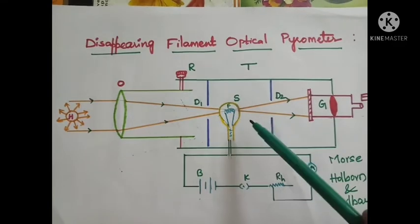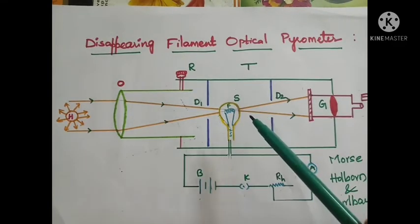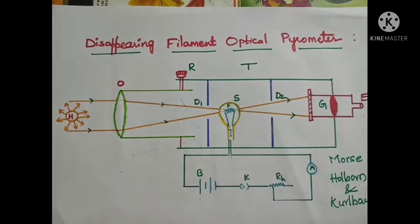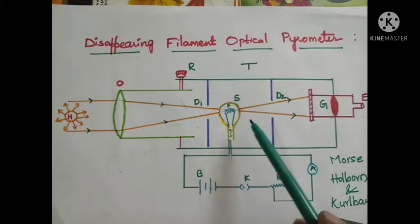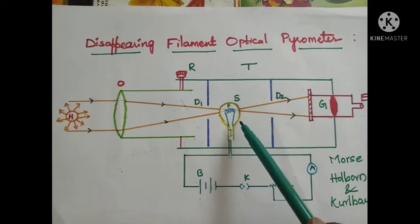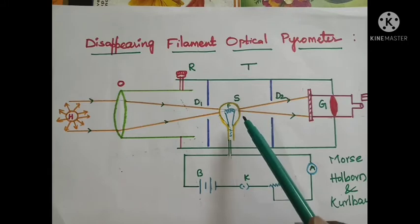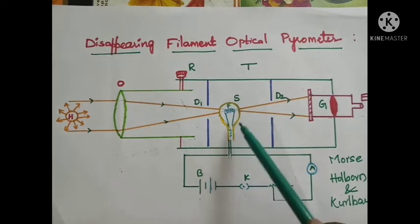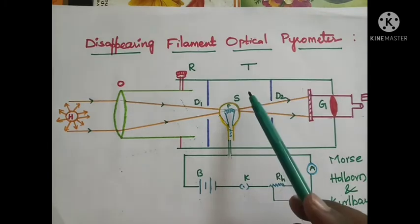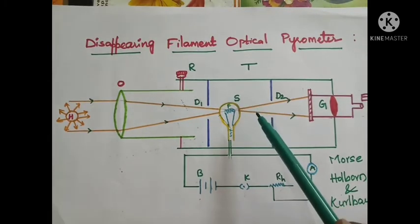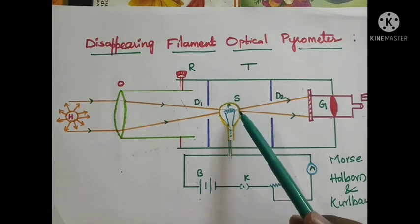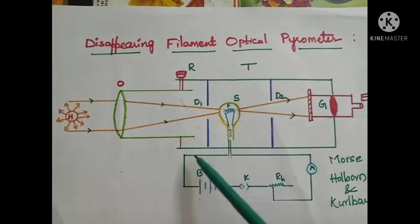As shown in the figure, the cross-wire of the telescope — we know that a telescope contains a cross-wire — but here that cross-wire is replaced by an electric bulb, that is, an electric lamp S. This is the bulb I am referring to, represented by S.